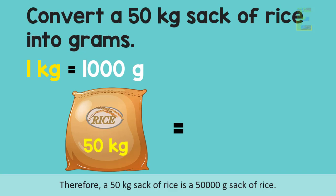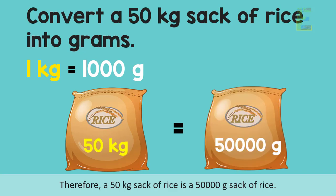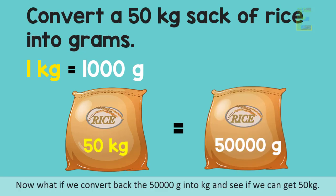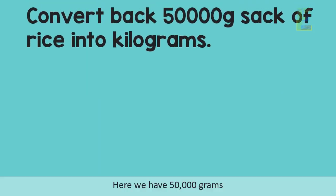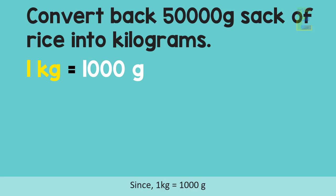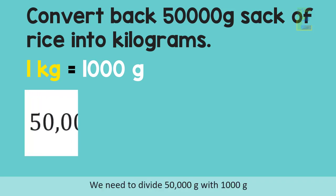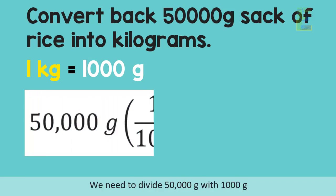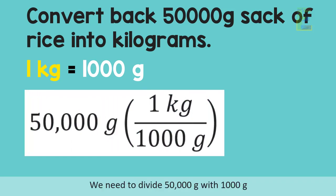Therefore, a 50 kilogram sack of rice is a 50,000 grams sack of rice. Now, what if we convert back 50,000 grams into kilograms to see if we get 50 kilograms? We have 50,000 grams. Since one kilogram is equal to one thousand grams, we need to divide 50,000 by one thousand.